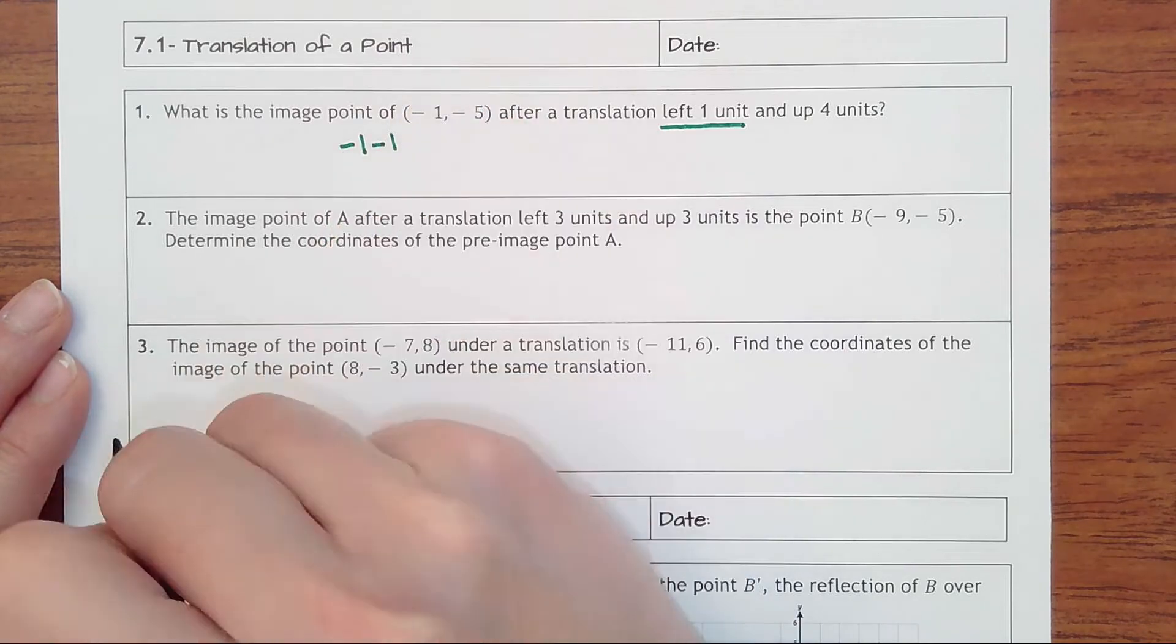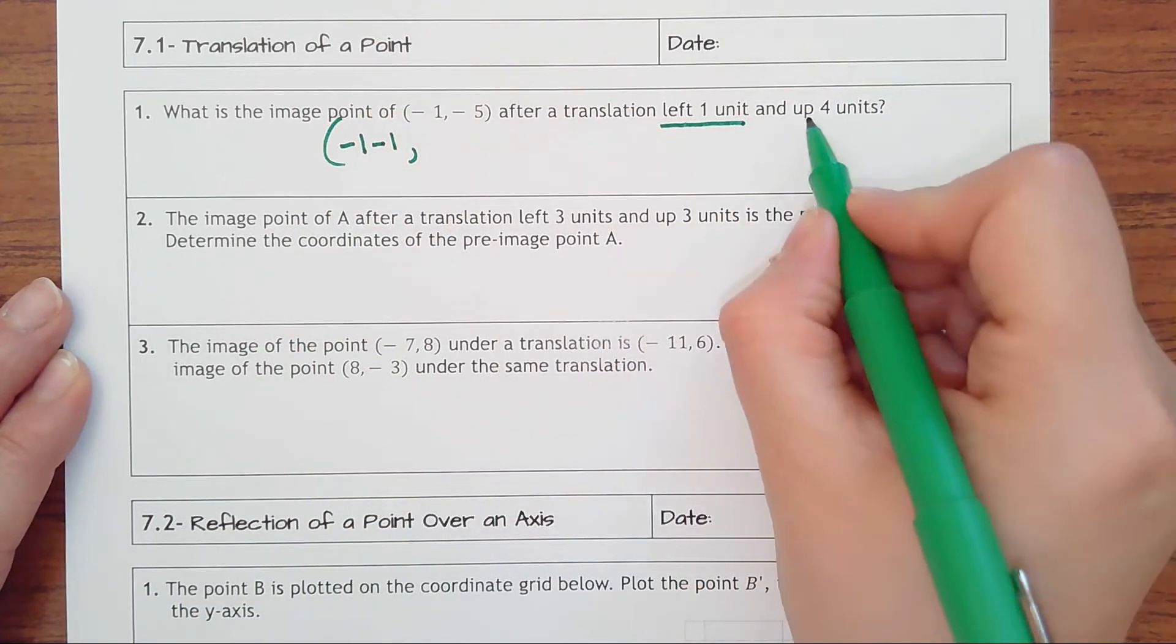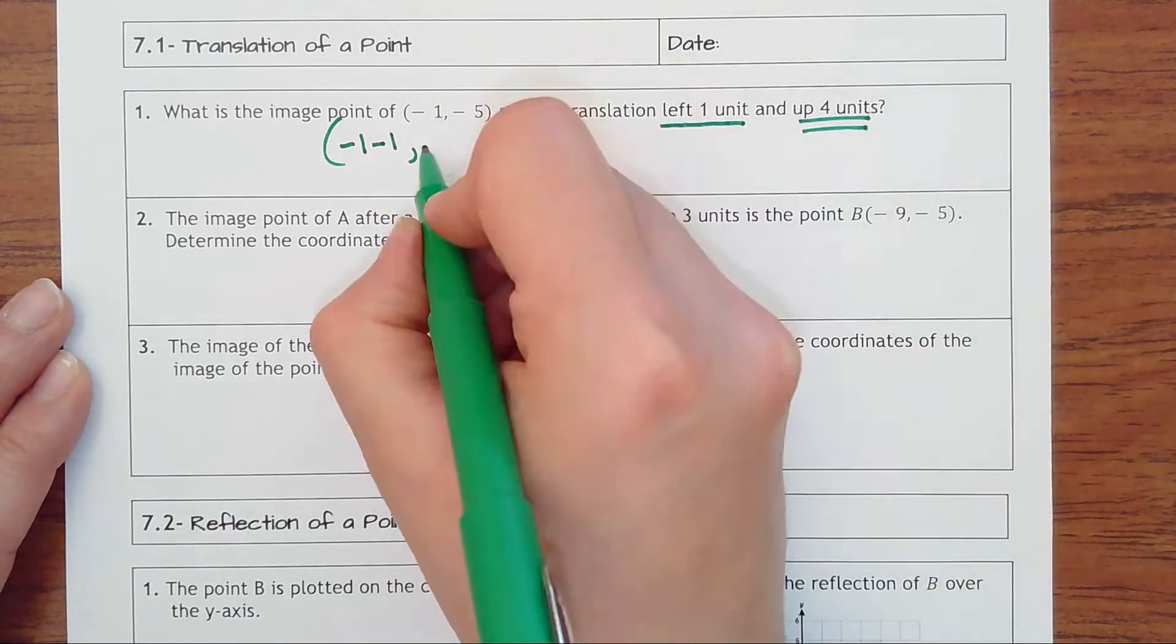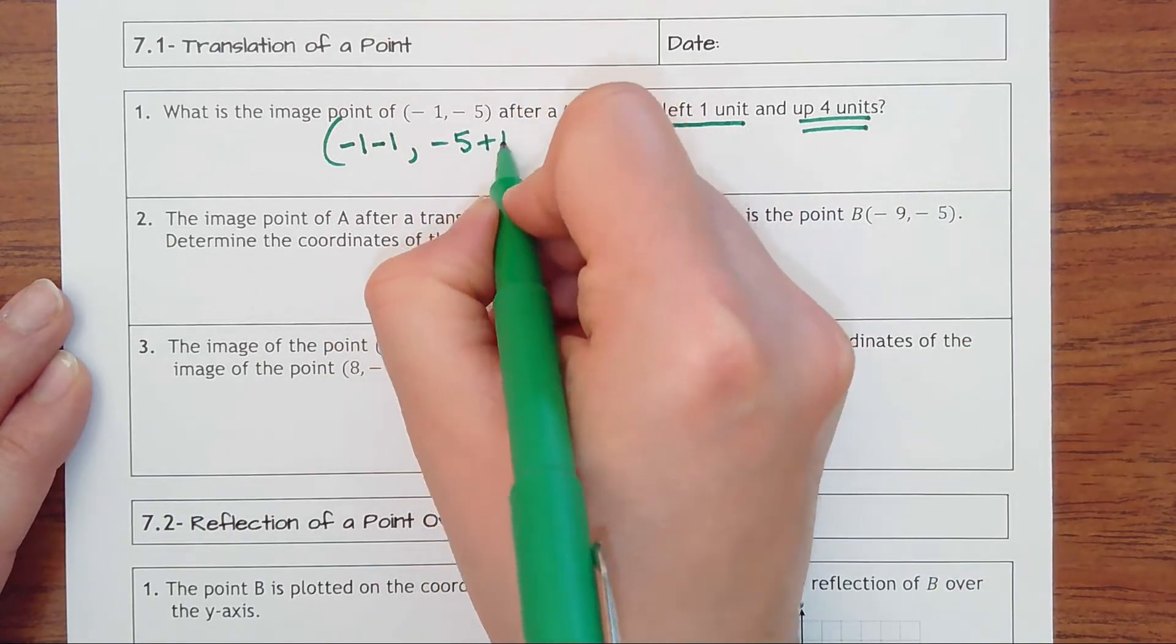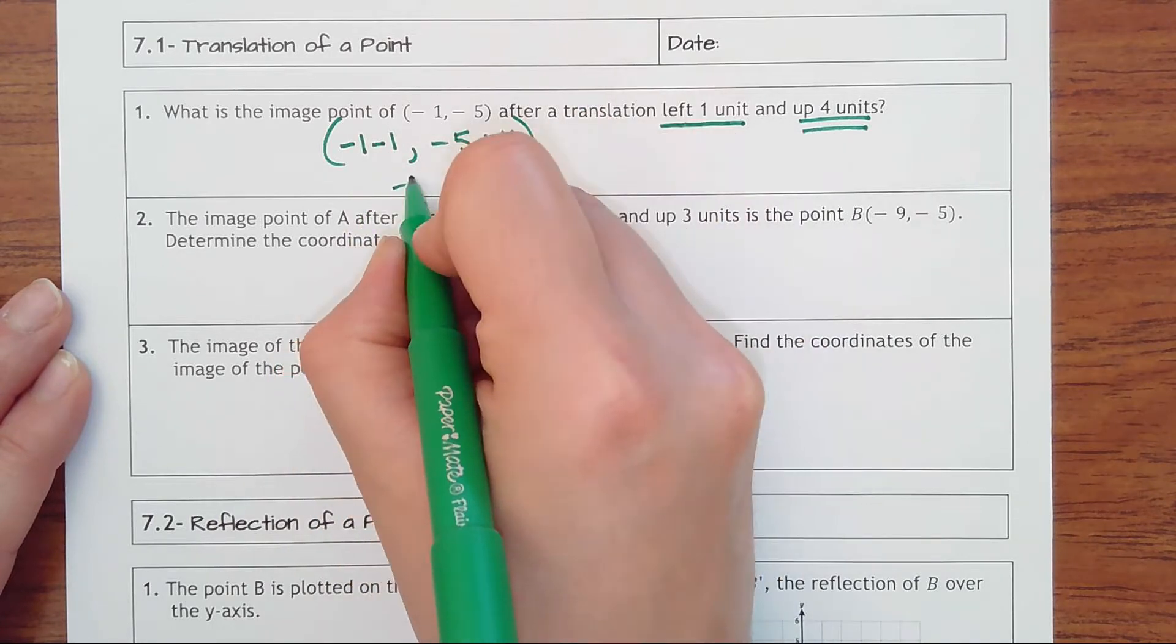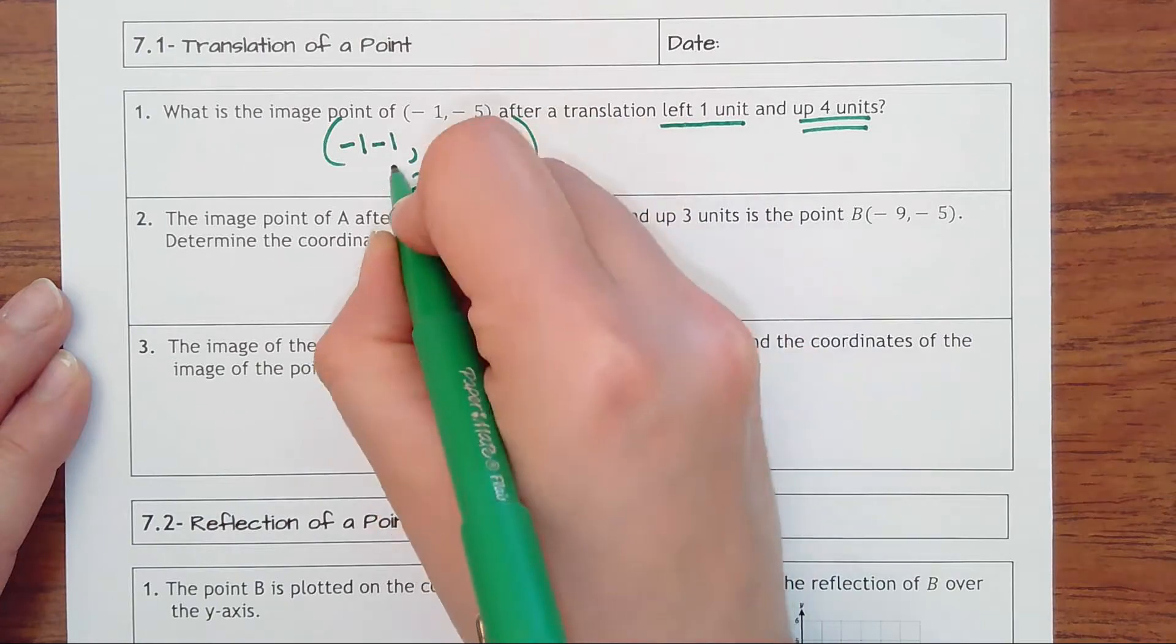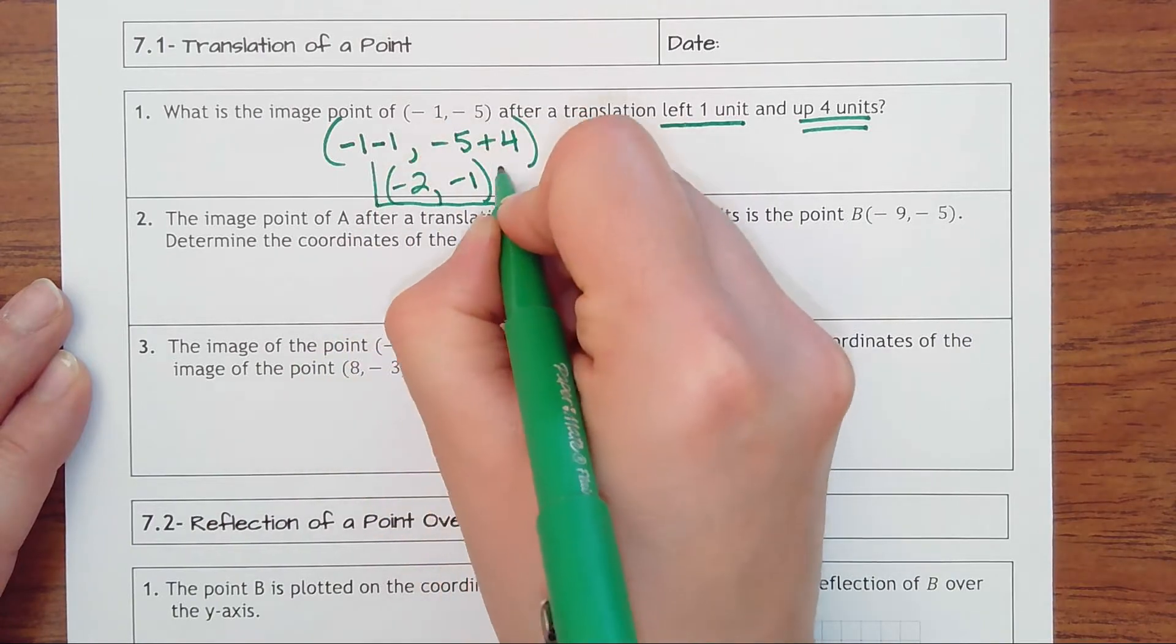And then it's four units up, so then that would take your y value and add four to it. If it went down you would subtract. And so -1 minus 1 would be -2, -5 plus 4 would be -1. And that would be the translation.